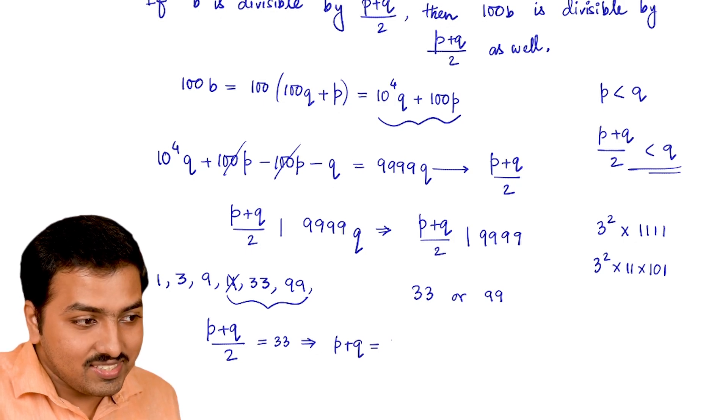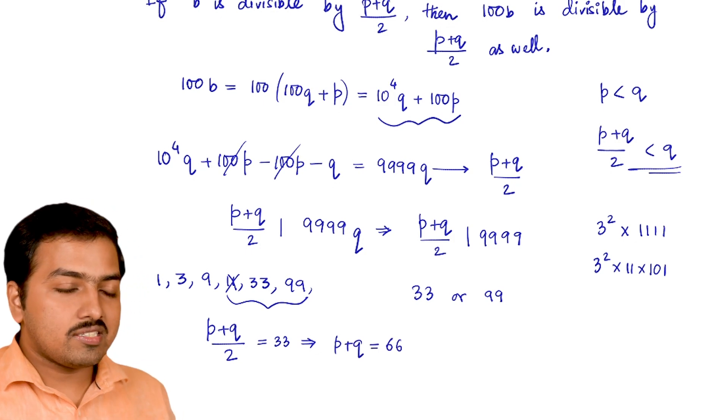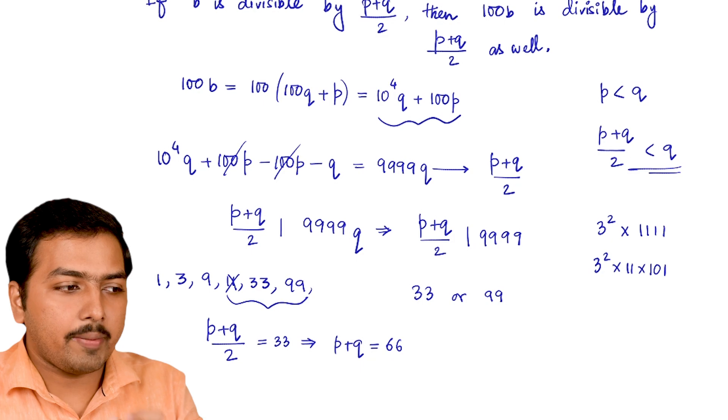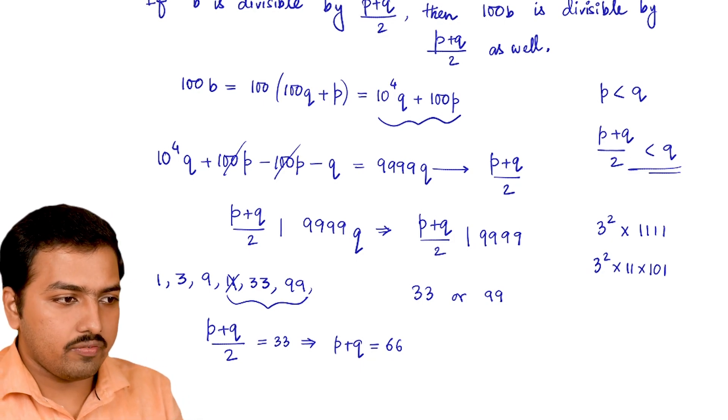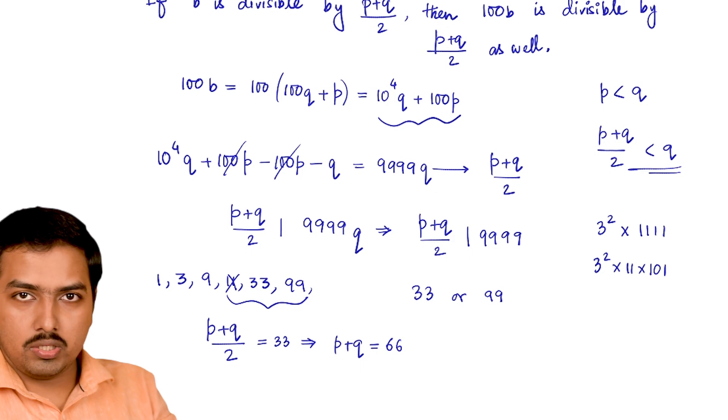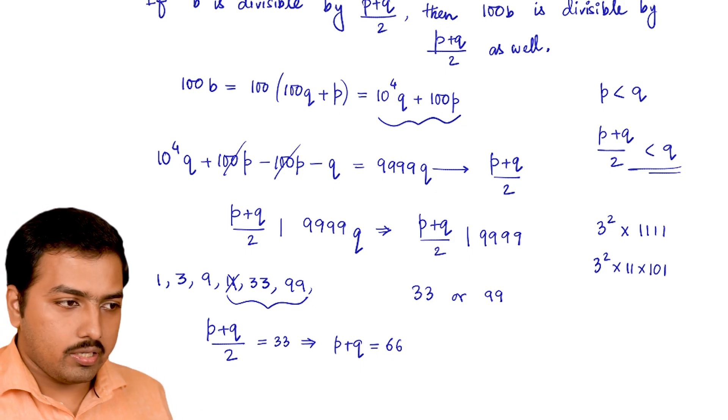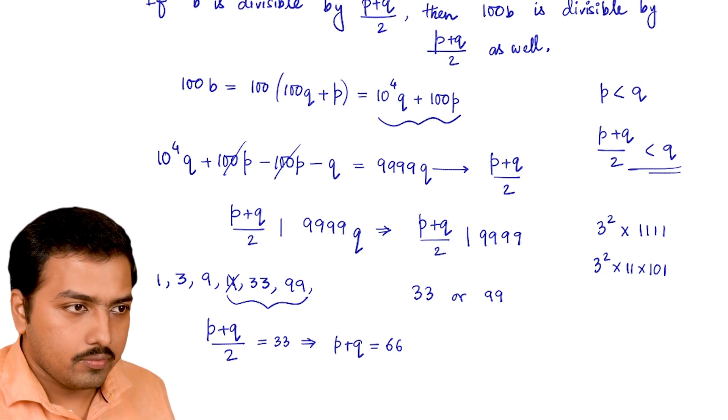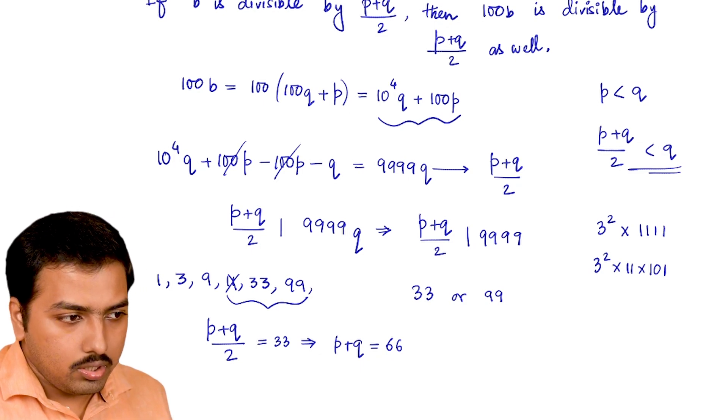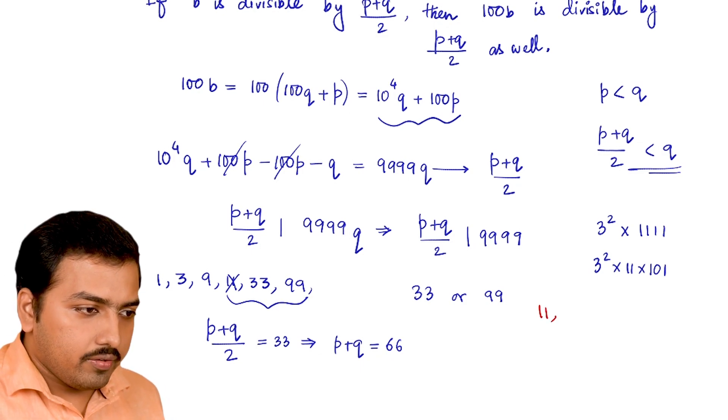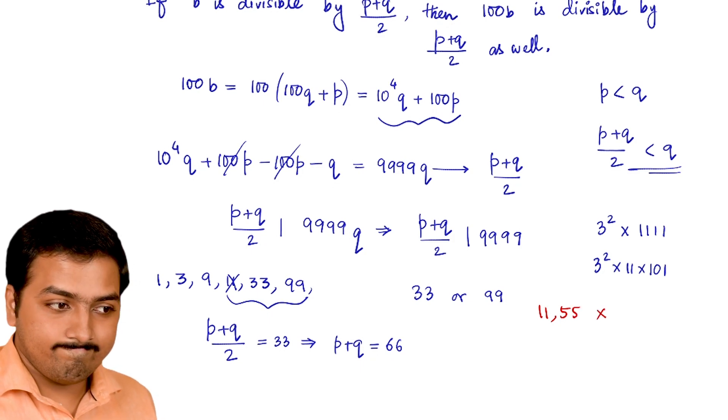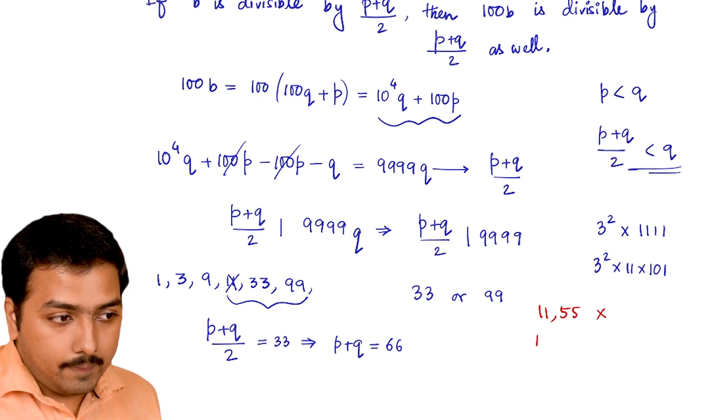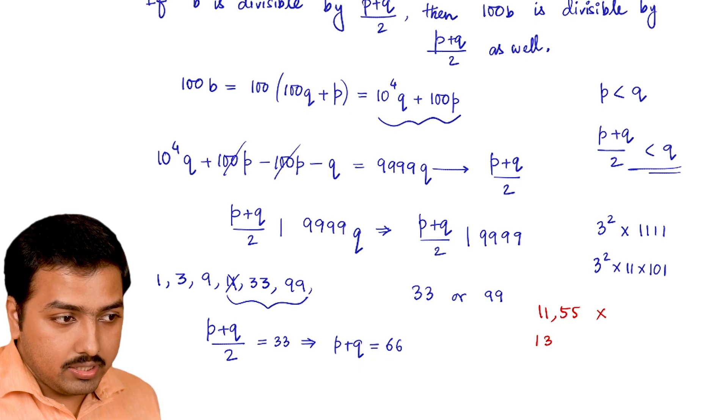So that gives us p + q = 66. So sum of two two-digit prime numbers is 66. Now we have to check whichever pairs of (p,q) is fulfilling the criteria. Let's start with 11: 11 and 55. Nope, 11 is a prime but 55 is not. Next, 13.